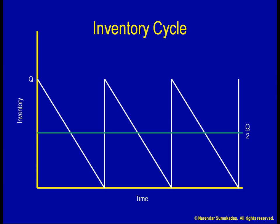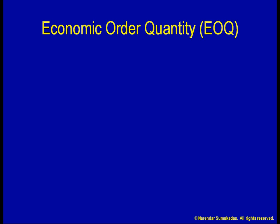Given this trade-off, we don't want our order quantity to be too large for fear of high inventory holding costs. At the same time, we don't want our order quantity to be too small either, for fear of frequent order placement and high ordering costs. What is the optimum order quantity? We call this optimum quantity the Economic Order Quantity, EOQ.